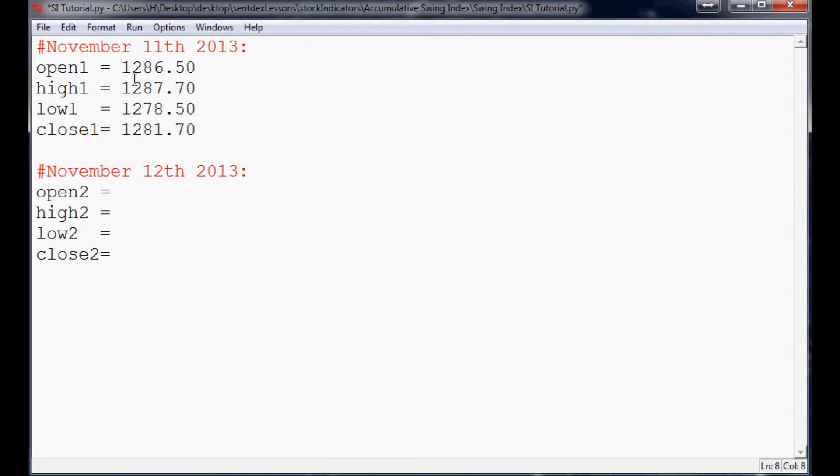Now, the November 12th open is $12.8180, the high was $12.8450, the low $12.6070, and the actual close $12.6670. So now that we've got some sample prices here, again, this is for gold. The gold is a limit move equals 75.